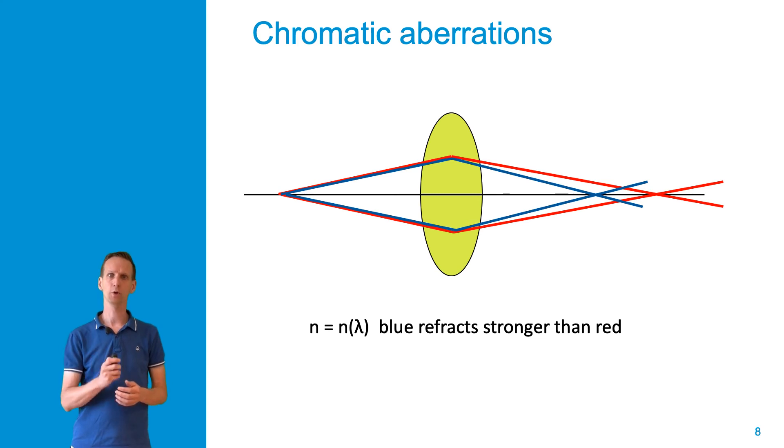I will show you an example of how such a lens system corrects for one particular type of aberrations, namely chromatic aberrations. We can distinguish two different types of aberrations. The first are chromatic aberrations, which result from the presence of multiple colors or wavelengths in the illumination light.